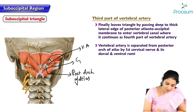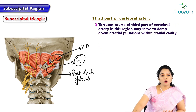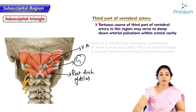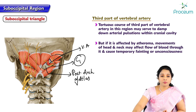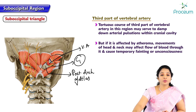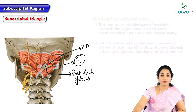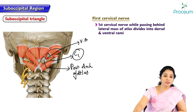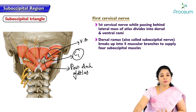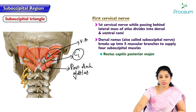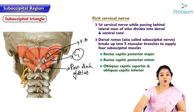The tortuous course of the third part of the vertebral artery in this region may serve to damp down arterial pulsations within the cranial cavity. However, it is affected by atheroma — plaque forming in the artery — and also by movements of the head and neck, which may affect blood flow through it and cause temporary fainting or unconsciousness. The dorsal ramus, otherwise called the suboccipital nerve, breaks up immediately into five muscular branches to innervate the four suboccipital muscles and also supplies semispinalis capitis.